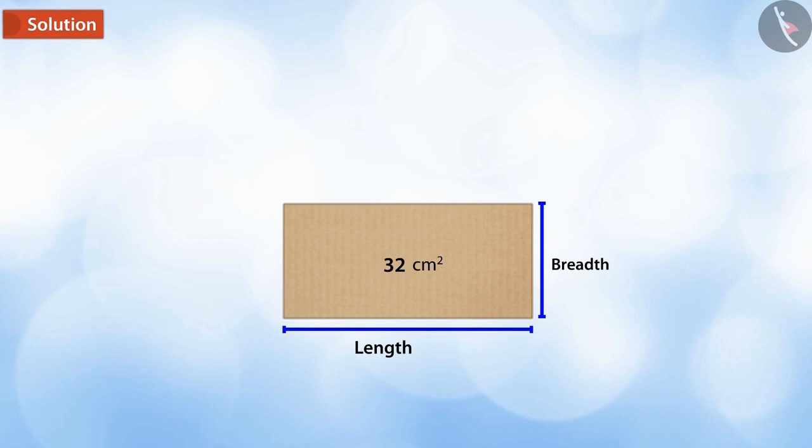First, let's assume the length of the box to be x cm. Then, to find the breadth, we need to double the length. On subtracting 12, we get 2x minus 12.